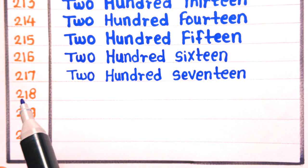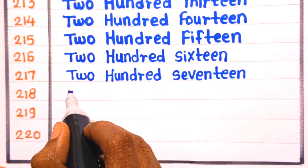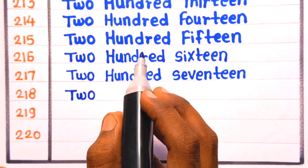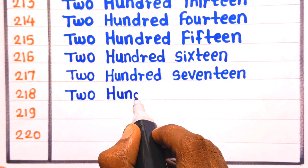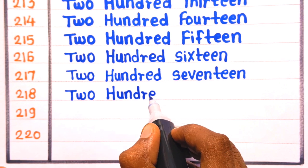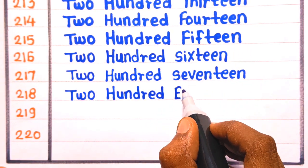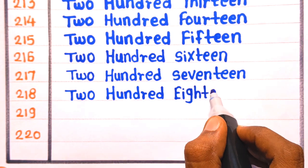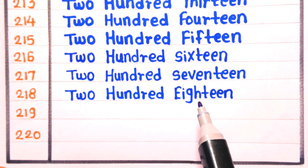Next is 218. T-W-O, two, H-U-N-D-R-E-D, hundred, E-I-G-H-T-E-E-N, eighteen. Two hundred eighteen.